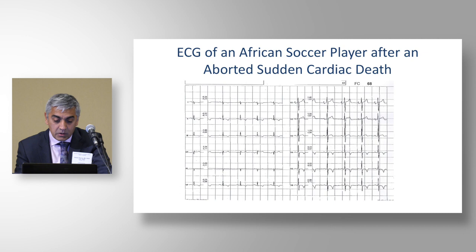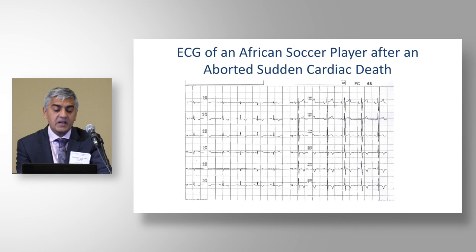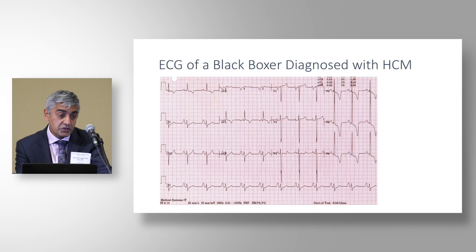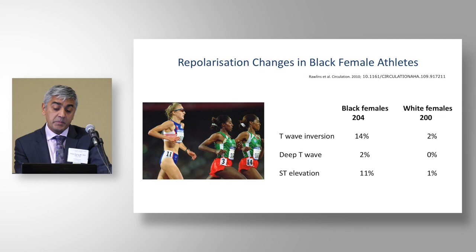Looking at that second case now, he has very small limb-lead complexes — for me, this is an arrhythmogenic ventricular cardiomyopathy that clearly wasn't picked up. And here is a more obvious case: a black boxer with deep T-wave inversion in the lateral leads diagnosed with hypertrophic cardiomyopathy — clearly more than just T-wave inversion, it's very deep with ST-segment depression in the lateral leads.